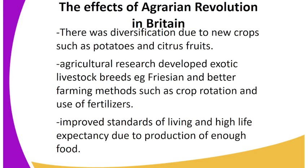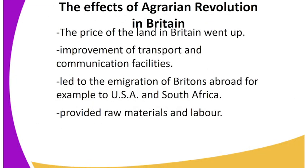There was diversification due to new crops such as potatoes and citrus fruits. Agricultural research developed exotic livestock breeds, for example Friesians, and better farming methods such as crop rotation and use of fertilizers were introduced. There was an improved standard of living and high life expectancy due to production of enough food. The price of land in Britain also went up, and transport and communication facilities improved.